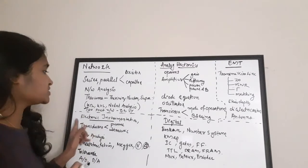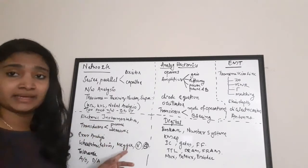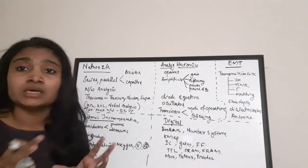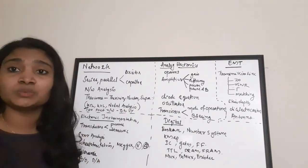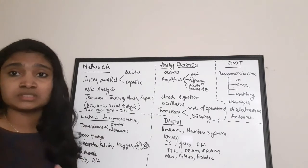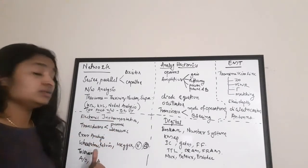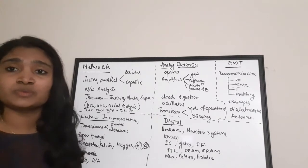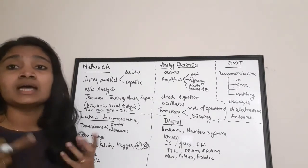The next important subject is Electronic Instrumentation and Measurements. Concentrate on various bridges such as Wheatstone bridge, Kelvin bridge, and voltmeter/ammeter problems. Study error analysis — finding the percentage error while measuring a circuit with a faulty device. Also important are transducers (pressure, ultrasonic types), tolerance values for series and parallel resistor connections, and Analog-to-Digital and Digital-to-Analog converters (ADC/DAC).